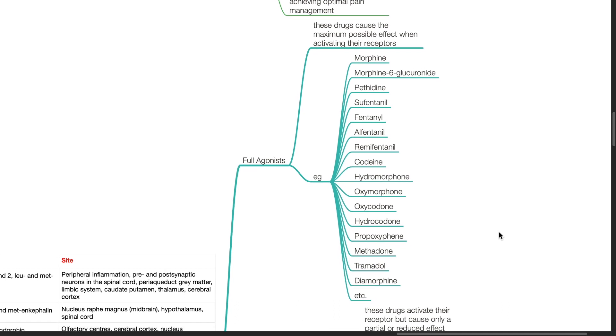Examples include morphine, morphine-6-glucuronide, pethidine, sufentanil, fentanyl, alfentanil, remifentanil, codeine, hydromorphone, oxymorphone, oxycodone, hydrocodone, propoxyphine, methadone, tramadol and diamorphine.